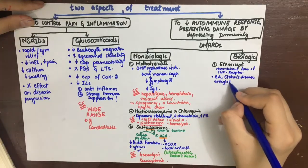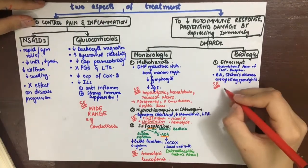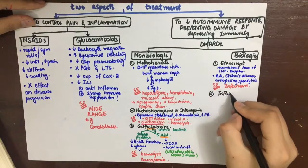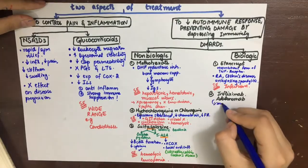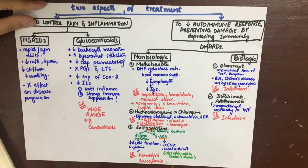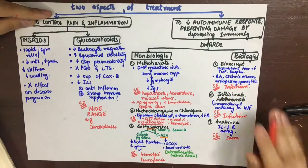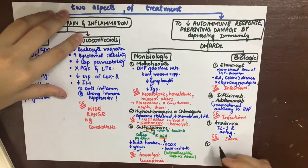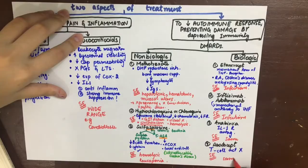The first biologic DMARD is etanercept, a recombinant form of the TNF receptor that acts like a sponge, absorbing TNF alpha. Since TNF is involved in immune reactions, inhibiting it can lead to opportunistic infections like TB. Next is infliximab and adalimumab, monoclonal antibodies to TNF that neutralize it. Anakinra is an interleukin-1 receptor antagonist. Abatacept is a T-cell activation inhibitor. All four drugs share the same side effect of suppressed immunity and thus opportunistic infections.